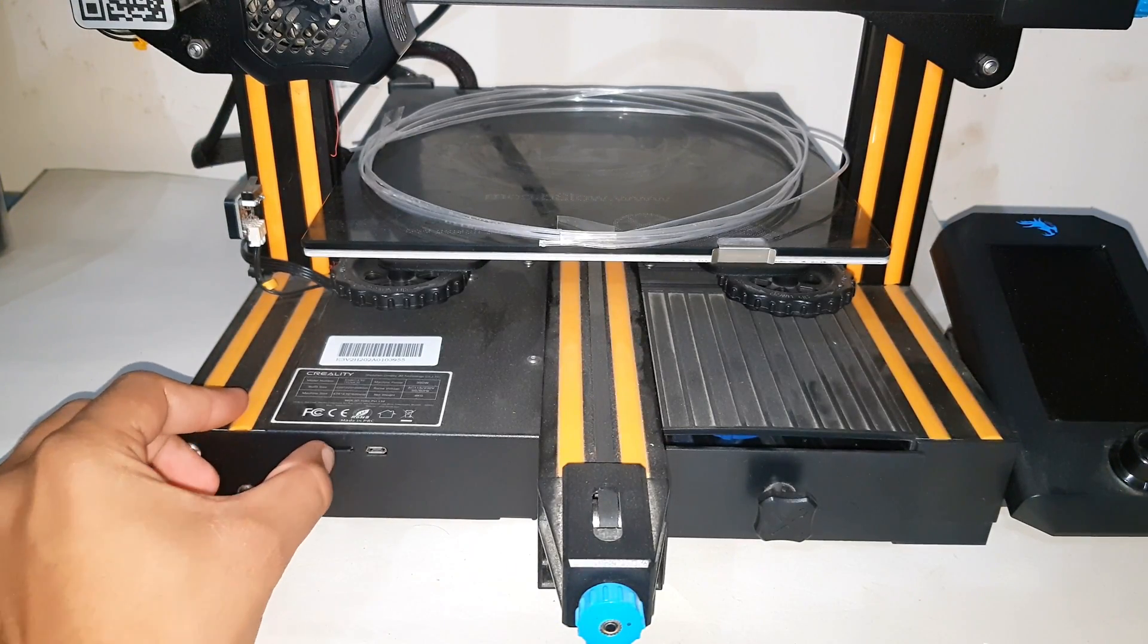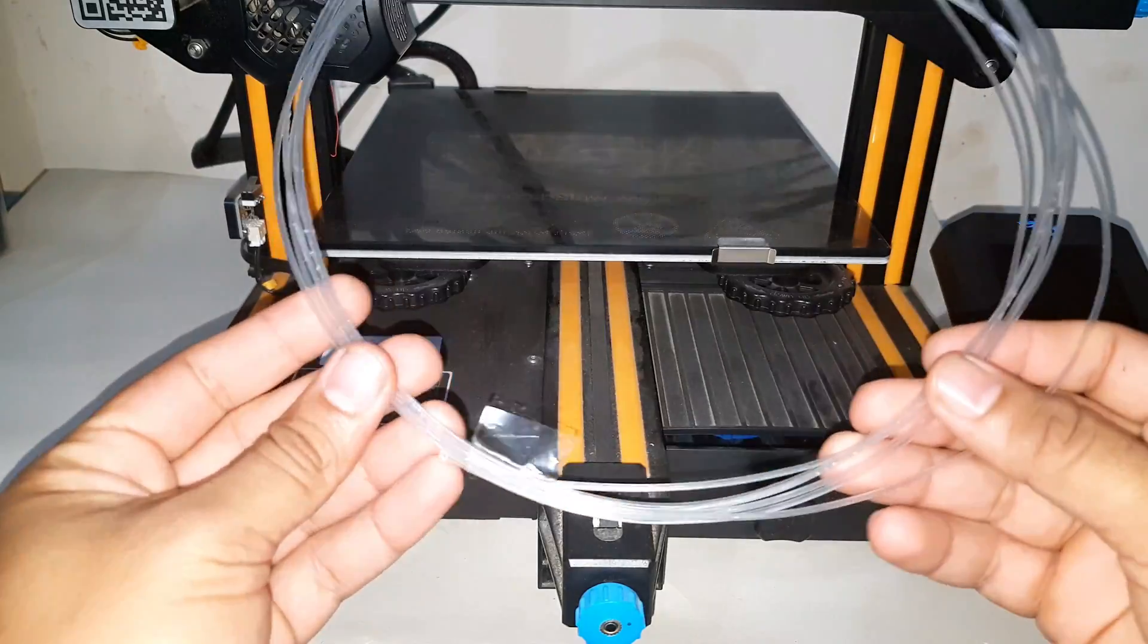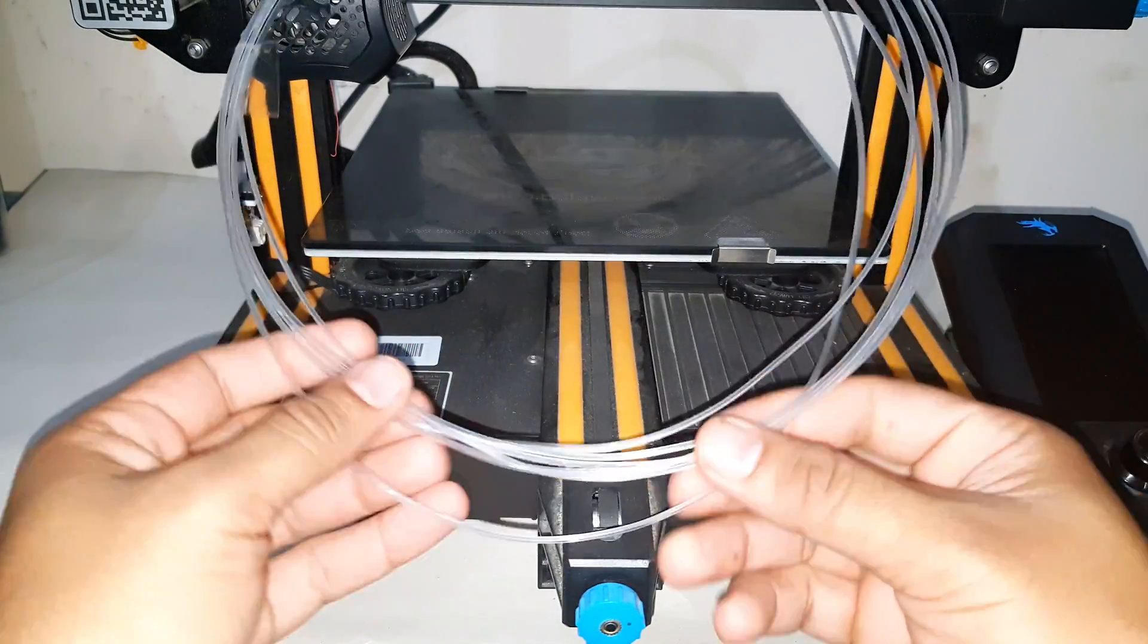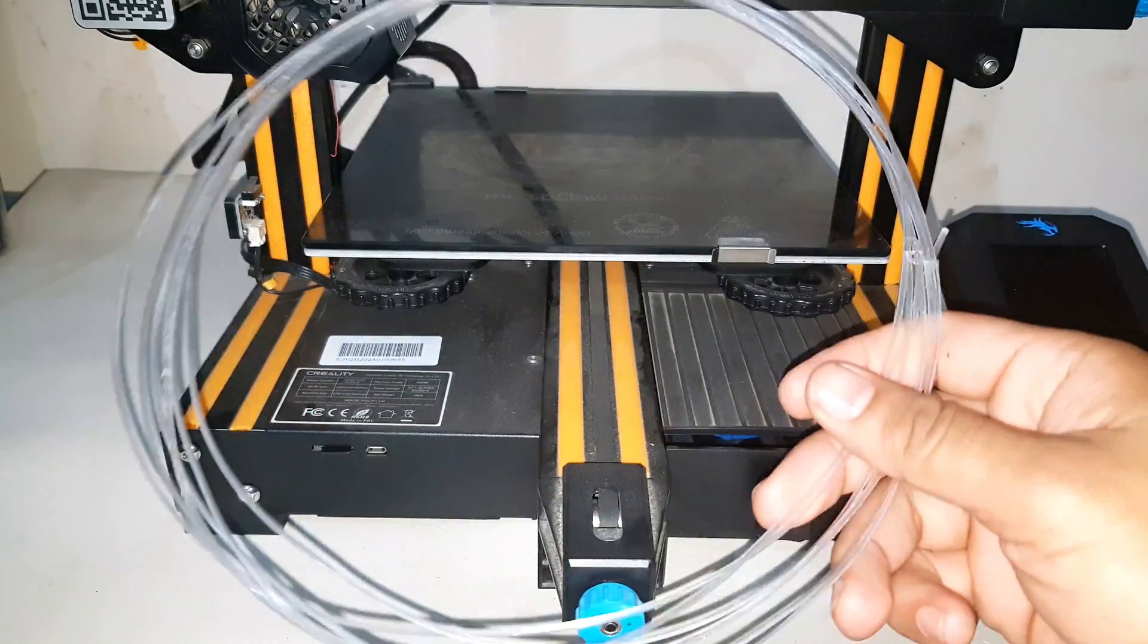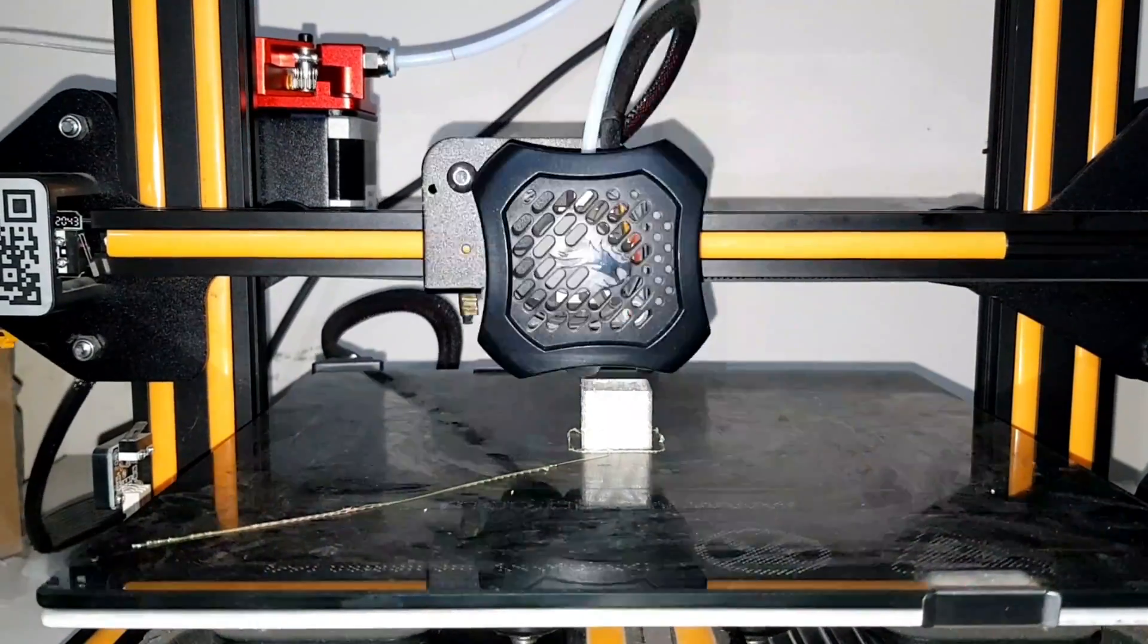This is the filament made from PET bottle. I am making 20mm calibration cube without changing any setting except for the nozzle and bed temperature on my Ender 3 V2 with dual gear extruder.